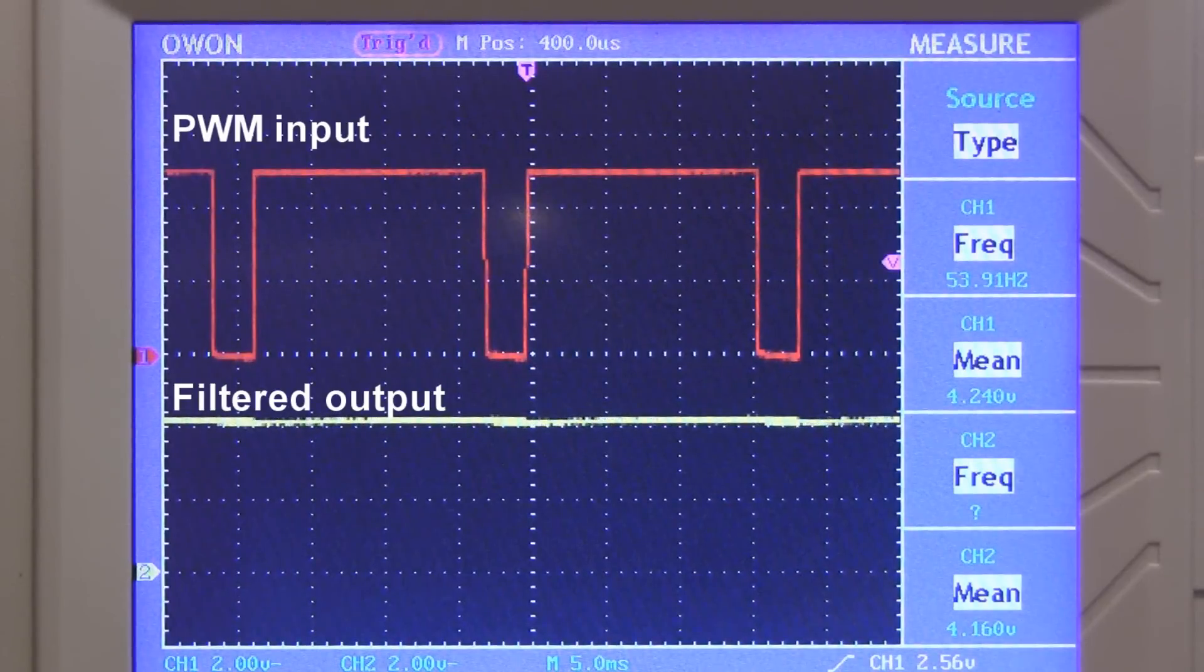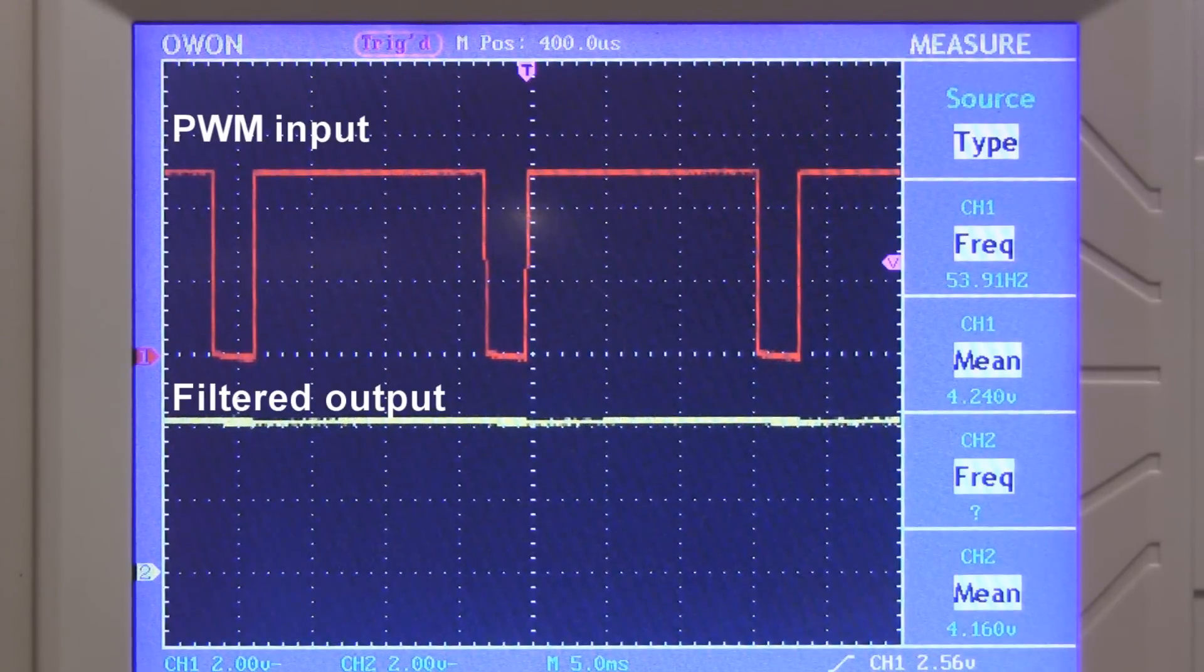Okay, here I have a 54 Hz PWM signal and the average voltage is 4.24 volts. At the output of the filter it looks like we've got almost pure DC with an average voltage of 4.16 volts. That's pretty close.